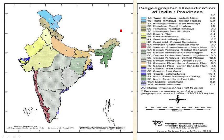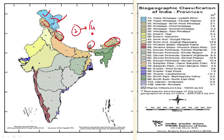These ten zones are further divided into 25 biogeographical provinces. The Trans-Himalayan zone is divided into two provinces: the Himalayan Ladakh mountains and the Himalayan Tibetan plateau. The Himalayan zone is divided into four provinces: Northwestern Himalaya, Western Himalaya, Central Himalaya, and Eastern Himalaya. The Indian Desert zone is divided into two provinces: the Thar Desert and the Kutch Desert.